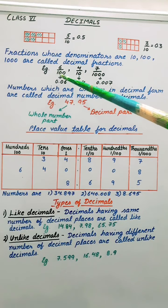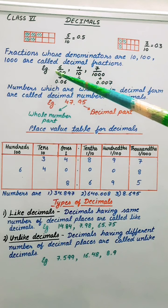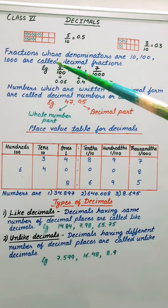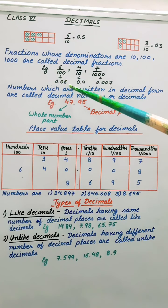Here also, now here because 2 zeros are there, so we will count 2 digits. So 1 is 6. Then nothing is there. So we have to put 0. So it is written as 0.06.